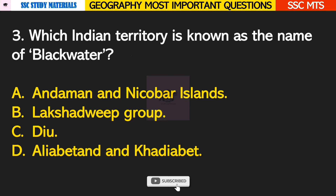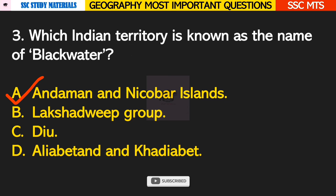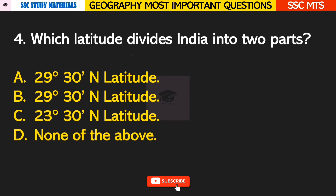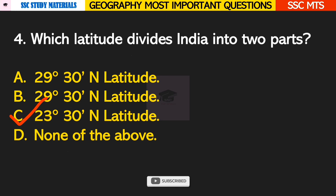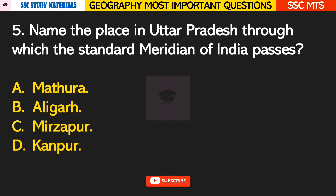Question number 3: which Indian territory is known by the name of Black Water? Answer A — Andaman and Nicobar Island. Question number 4: which latitude divides India into two parts? Answer C — 23 degree 30 north latitude.